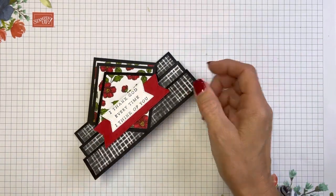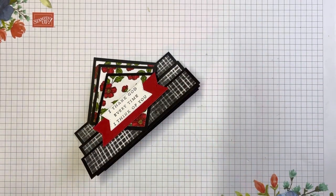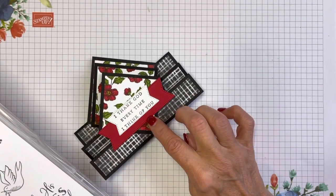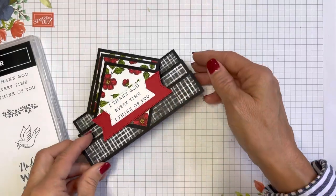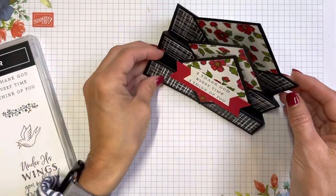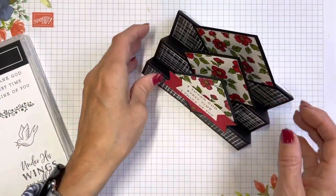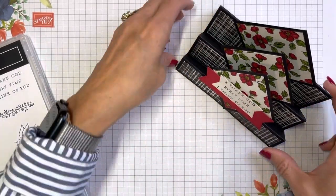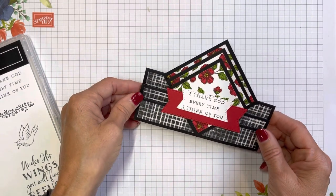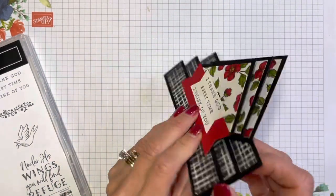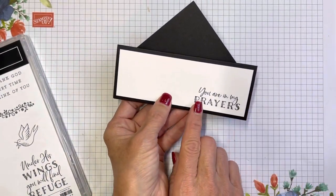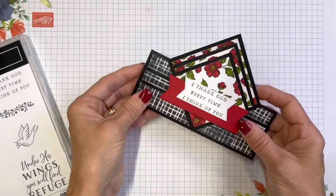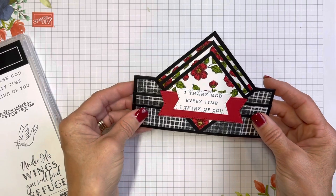I used my Real Red blends with Dark Daffodil Delight and Dark Granny Apple Green. I used those really fun Stylish Shapes dies and used the banners out of there. I just got the Hope and Prayer stamp set. I put this, 'I thank my God every time I think of you' on the front.